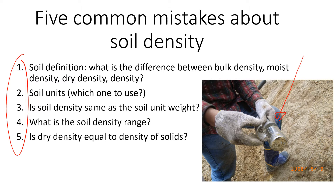The first one is related to soil definition. Some students get confused about the difference between bulk density, moist density, and dry density — they think it's the same, or not the same, or they just don't know. Then students make mistakes about soil units: they don't know which one to use, and sometimes they don't use the right numbers. Some students get confused about unit weight — instead of unit weight, they use density, which is not the same thing. Another mistake is students sometimes come up with really strange numbers related to density and don't know the common range. And probably the most common mistake is that almost every student thinks dry density is equal to density of solids — we'll see if that's correct.